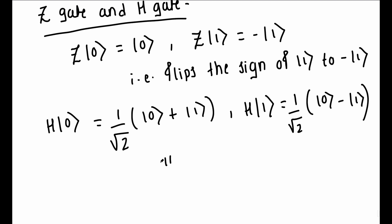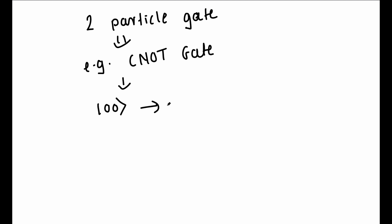These gates act on single particle states. We also have gates which act on two particle states. An example of this is a CNOT gate. Its action is if the first particle is in state ket 0, then the second particle state is unchanged. And if the first particle state is in state ket 1, then the second particle state is flipped.